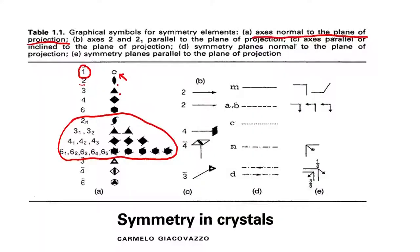Similarly, we have the 3-bar, 4-bar, and 6-bar — these are three-fold rotations with inversion centers, four-fold rotations with inversion centers, and so on.